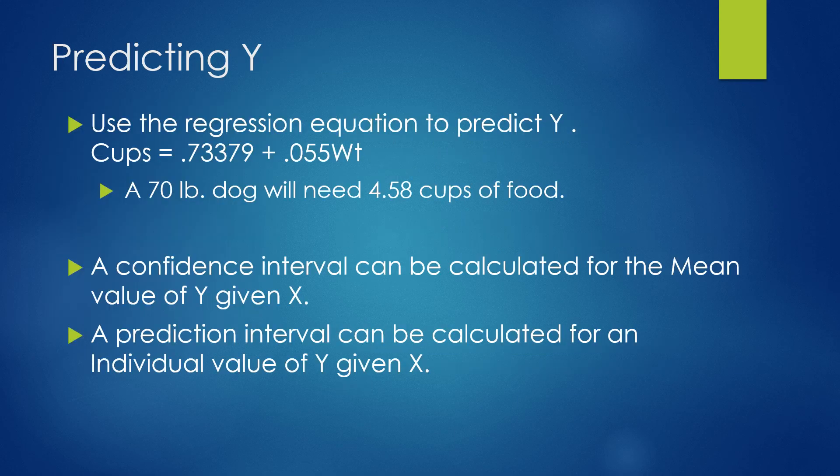Now, we're going to talk about predicting Y values. We're going to use the regression equation cups equal .73379 plus .055 times weight. We put the weight of a dog into that equation, so a 70 pound dog would need 4.58 cups of food.